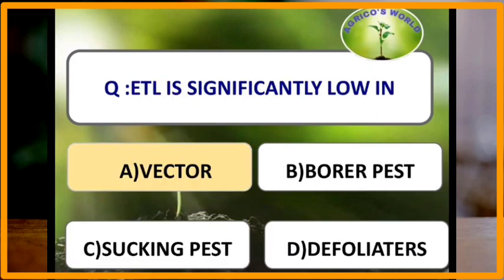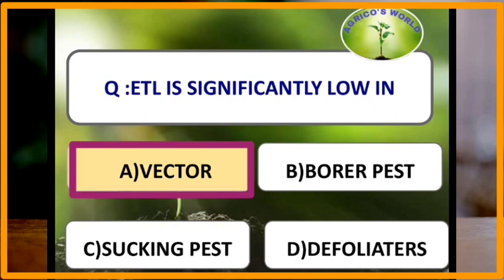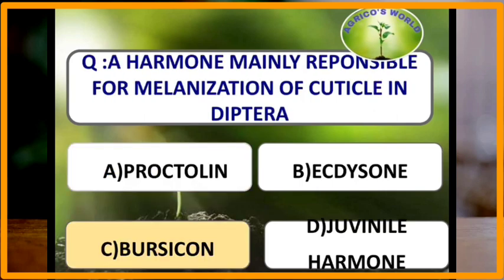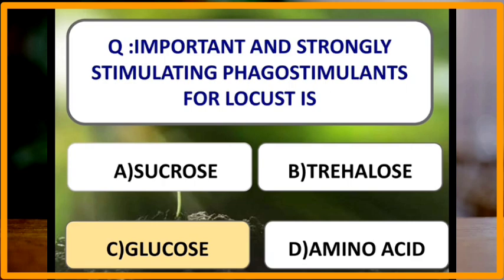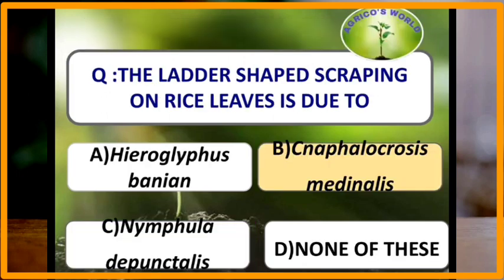Economic threshold level is significantly low in vectors. A hormone mainly responsible for melanisation of cuticle in Diptera is bursicon. The most important and strongly stimulating phagostimulant for locusts is glucose.